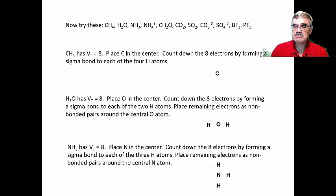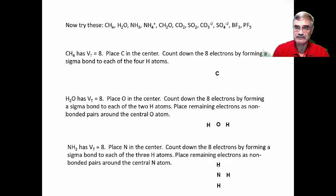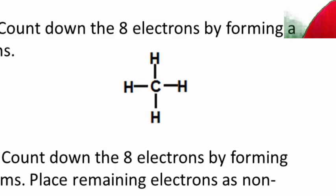Between carbon and hydrogen, the atom that will go in the center is carbon, because hydrogens can never go in the middle — they're too small. So we put carbon in the middle and place the hydrogens in the top, bottom, left, and right positions. Adding up the total valence electrons: four for carbon, plus four times one for the four hydrogens, gives VT = 8. We place carbon in the center, add the four hydrogens as terminal atoms, and count down from eight two at a time, forming sigma bonds between the central carbon and each hydrogen. And we have formed the Lewis dot structure of methane.